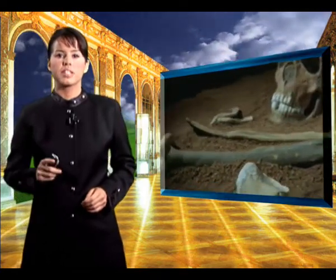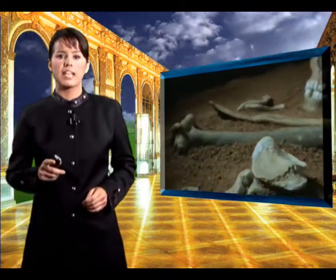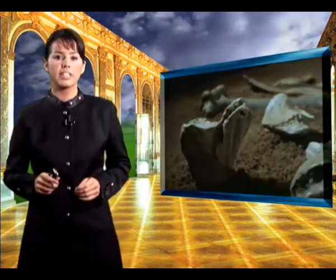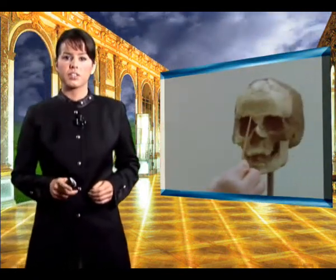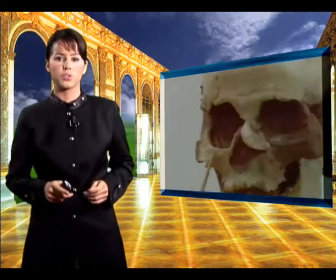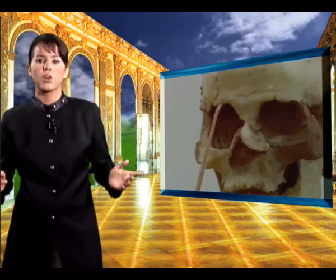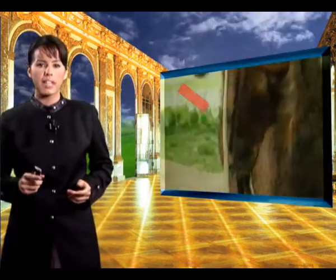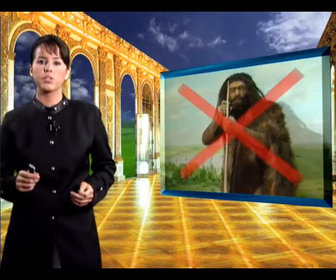Reconstructions based on bone remains can only reveal the most general characteristics of the creature. Since the really distinctive morphological features of an animal are soft tissues, which quickly vanish after death, the reconstructed drawings or models become totally dependent on the imagination of the person producing them due to the speculative nature of the interpretation of soft tissues.